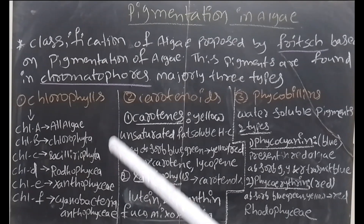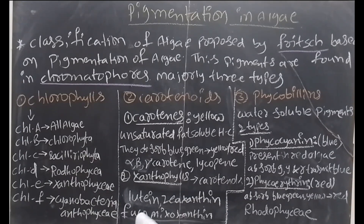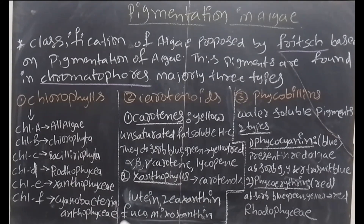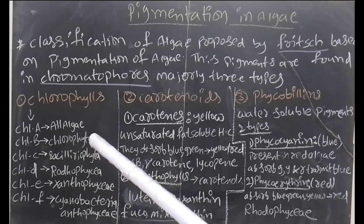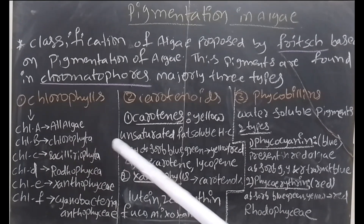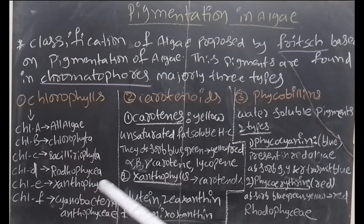Chlorophylls: there are five to six various types — Chlorophyll A, B, C, D, E, F. Chlorophyll A is present in all algal groups. Chlorophyll B is present in Chlorophyta. Chlorophyll C is present in Bacillariophyta. Chlorophyll D is present in Rhodophyceae. Chlorophyll E is present in Xanthophyceae. Chlorophyll F is present in cyanobacteria and Anthocerotophyta.